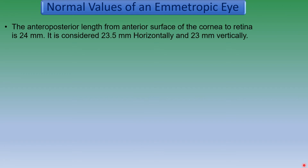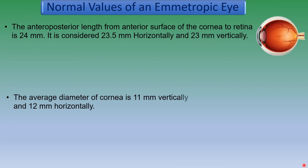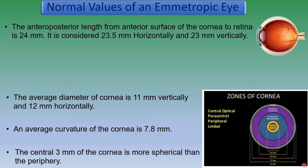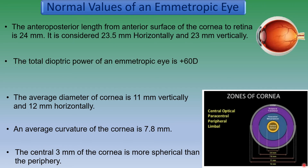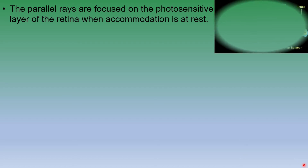Let's know more about the normal values of an emmetropic eye. The antero-posterior length from the anterior surface of the cornea to the retina is 24 mm. It is considered 23.5 mm horizontally and 23 mm vertically. The average diameter of cornea is 11 mm vertically and 12 mm horizontally, which makes the cornea more curved in the vertical meridian. The average curvature of the cornea is 7.8 mm. The central 3 mm of the cornea is more spherical than the periphery. The total dioptric power of an emmetropic eye is plus 60 diopters. The parallel rays are focused on the photosensitive layer of the retina when accommodation is at rest.